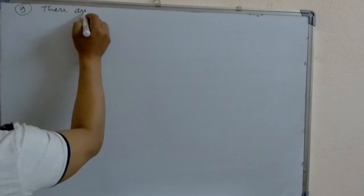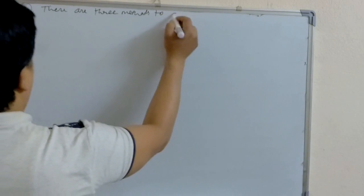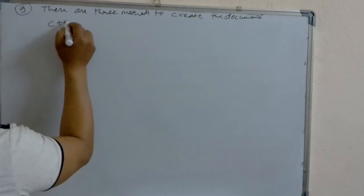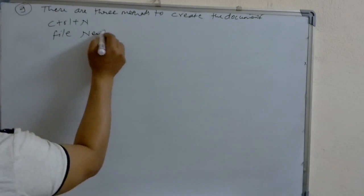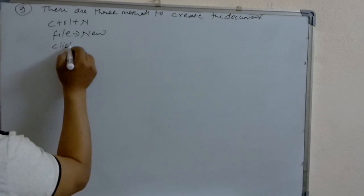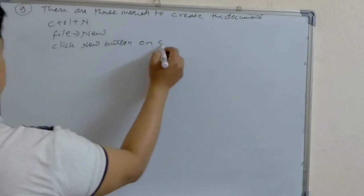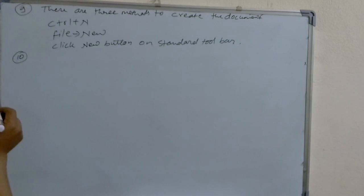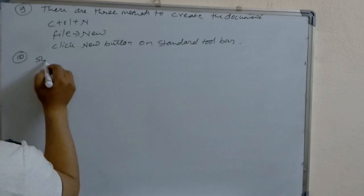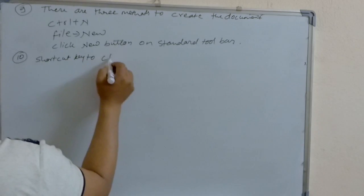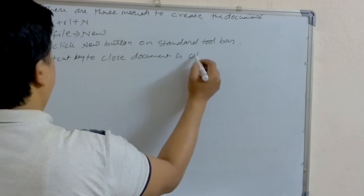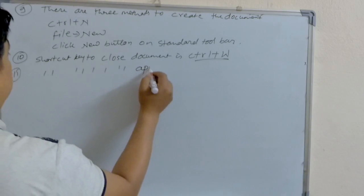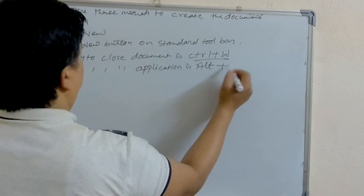There are three methods to create a document. One, using the shortcut key Control+N. Two, using File > New. Three, by clicking the New button on the standard toolbar. The shortcut key to close a document is Control+W, and the shortcut key to close the application is Alt+F4.